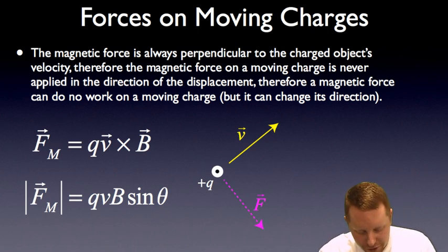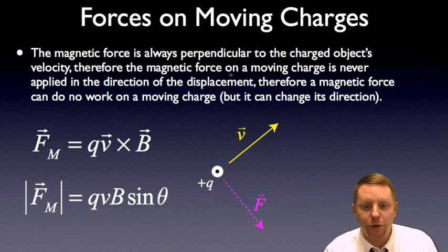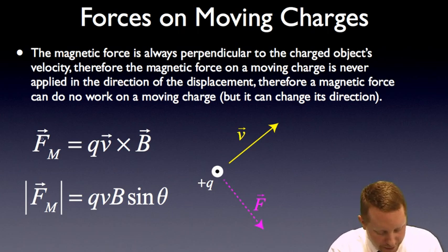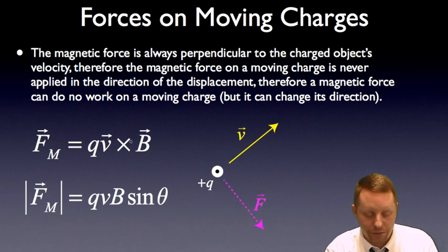So let's get into the forces on moving charges. The magnetic force is always perpendicular to the charged object's velocity. Therefore the magnetic force on a moving charge is never applied in the direction of the displacement. Therefore a magnetic force can do no work on a moving charge. It can change its direction, however. The magnetic force, fm or sometimes written fb, is the charge times the velocity vector crossed with the magnetic field vector.